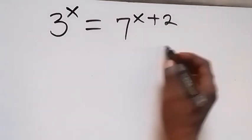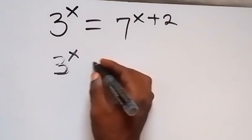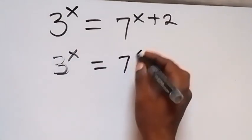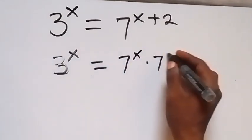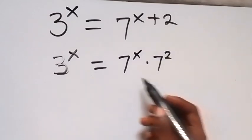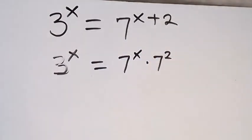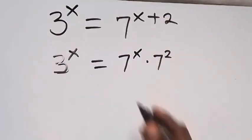From here, let's write this again. This becomes 3 raised to power x equals 7 raised to power x times 7 raised to power 2. This is from the law of indices—when we have the same base, we can add the powers.